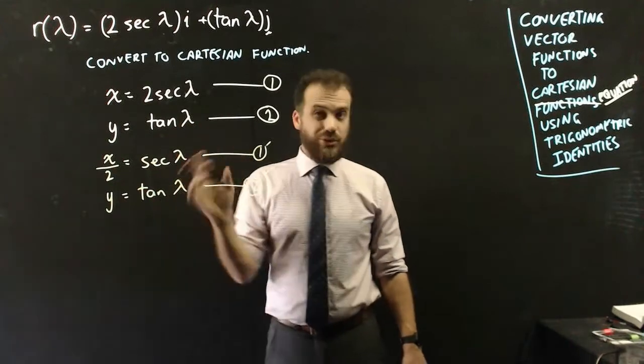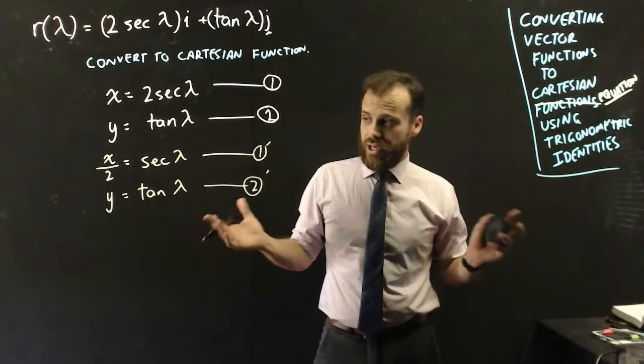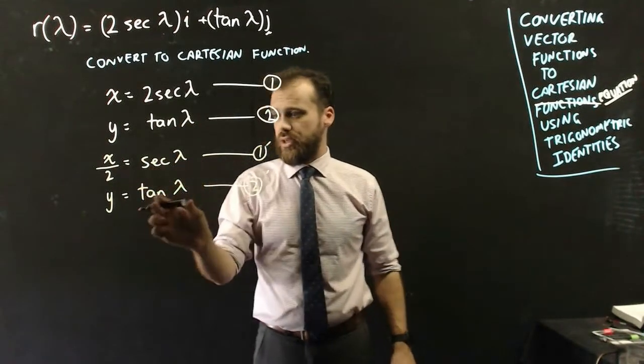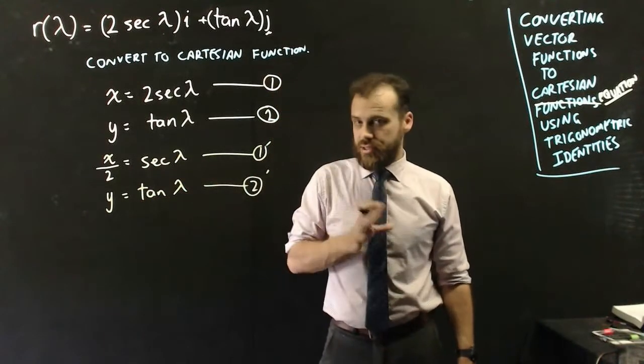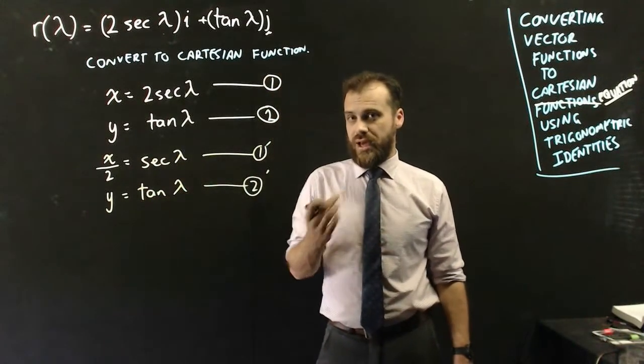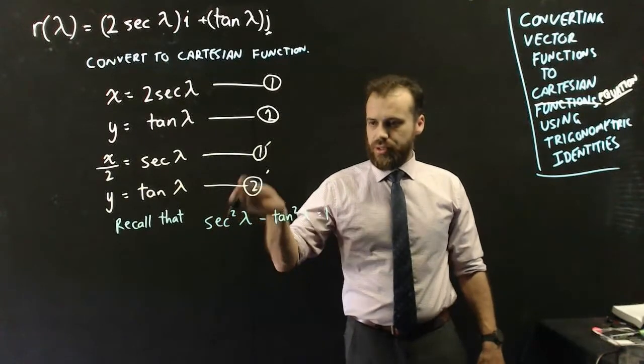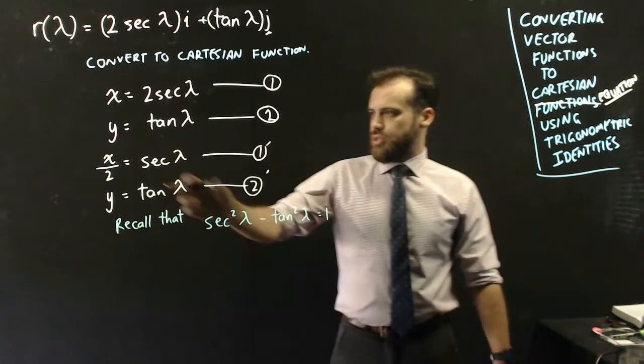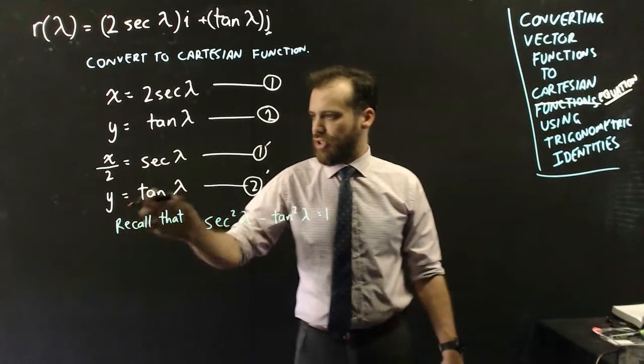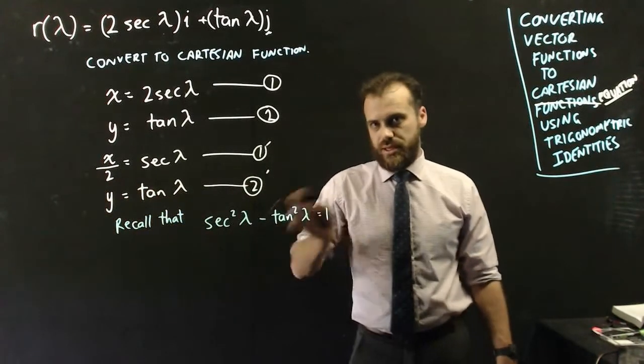So now we need to look at our formula sheet and find some relationship between sec theta and tan theta. And I can see one on my formula sheet, and that is this one. It's sec squared lambda minus tan squared lambda equals 1. So now I can shove x on 2 into here and shove y into here.